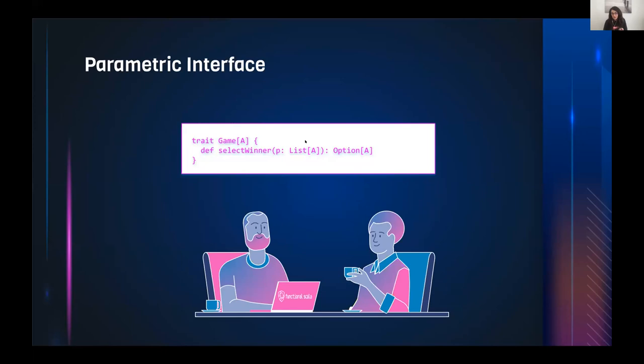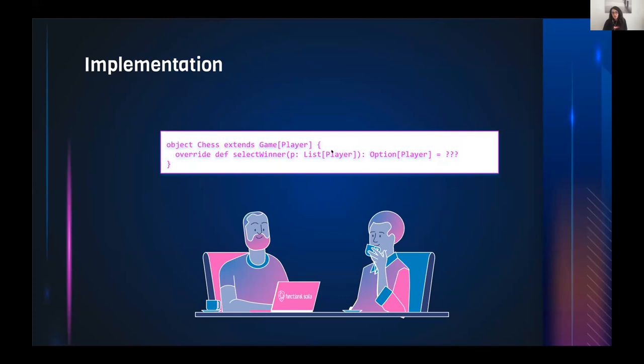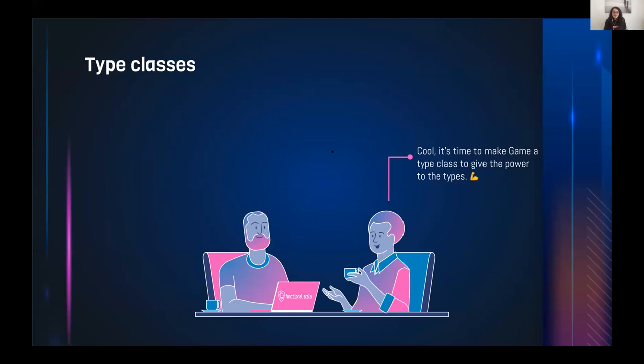We can make the Game interface generic: we make the participant list generic and from this list pick the winner. For a functional programming raffle, we can pick the winner by email from a list of emails. For a chess game, each player has a score, so there would be some computation in that implementation.